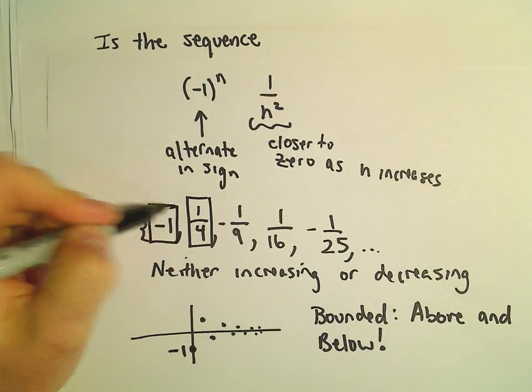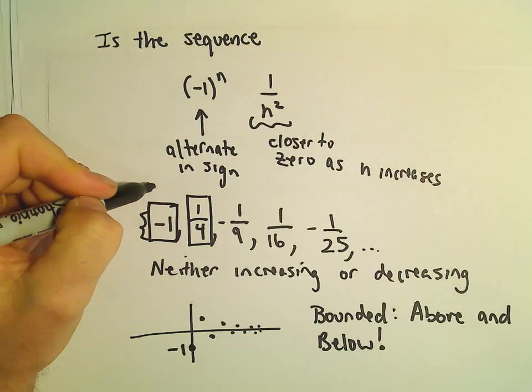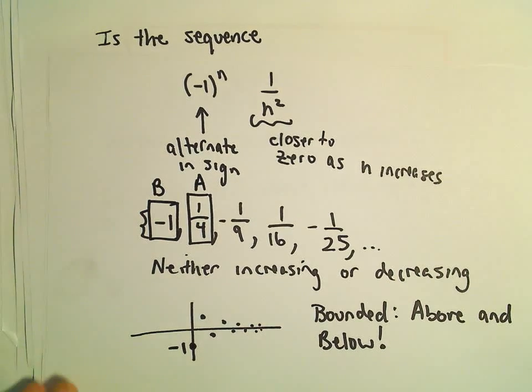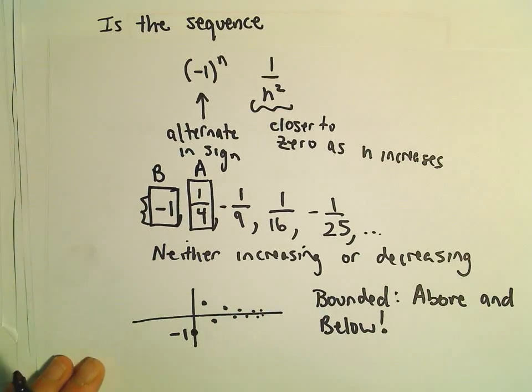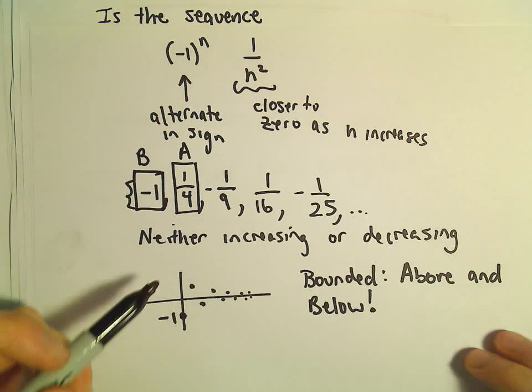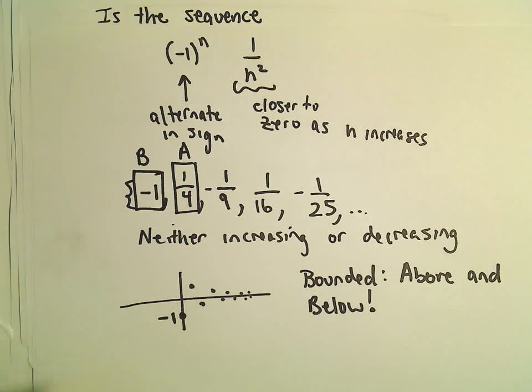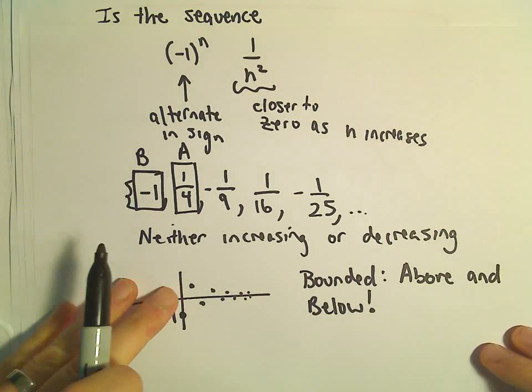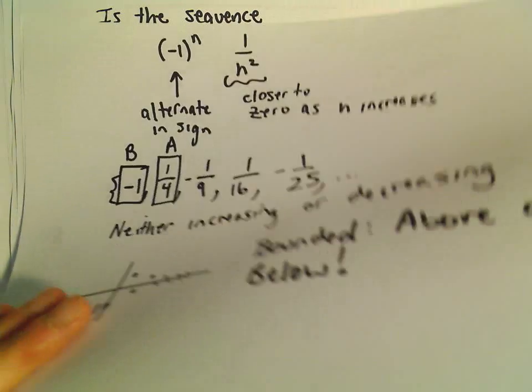So it's bounded below and above by both of these numbers. Again, if a sequence is neither strictly increasing or decreasing, it is bounded above and below. In that case, you can't really say for sure that it converges or not.